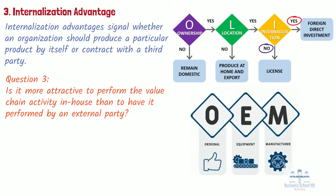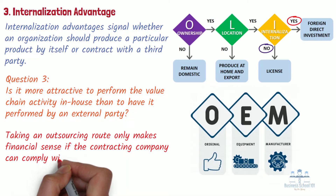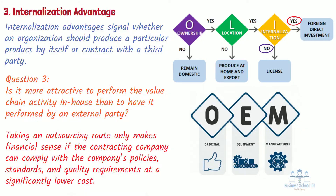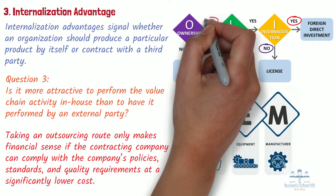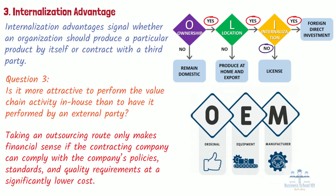Please keep in mind that if a company decides to outsource production, it may require negotiating partnerships with local suppliers. However, taking an outsourcing route only makes financial sense if the contracting company can comply with the company's policies, standards, and quality requirements at a significantly lower cost. After answering these three questions with the aid of the OLI paradigm, companies should be able to at least exclude some entry strategies. When all questions have been answered with yes, it should be a good option for companies to engage in foreign direct investment and stay in control over the activities themselves.